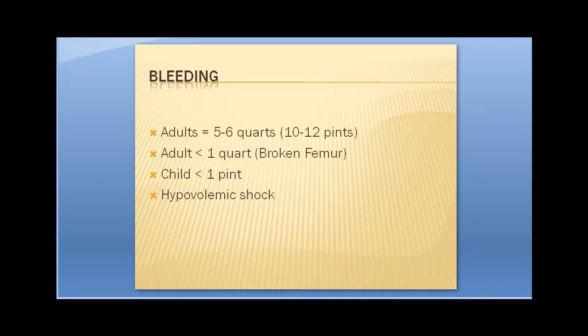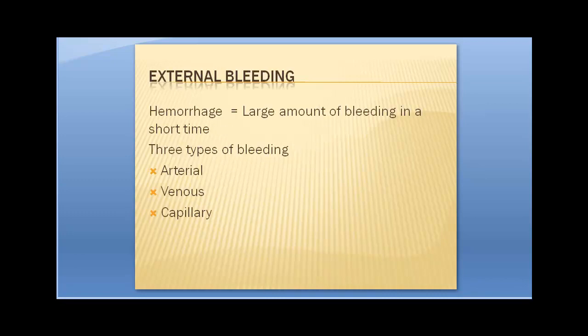Hypovolemic shock is simply loss of blood externally or internally — low blood volume. External bleeding, or hemorrhage, is large amounts of bleeding in a short period of time. There are three main types, also classified as hypovolemic. You have arterial bleeding, which is harder to control. It's bright red oxygenated blood that spurts several feet from the wound because it has all that pressure from the left ventricle contracting.